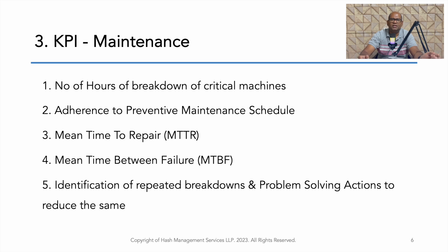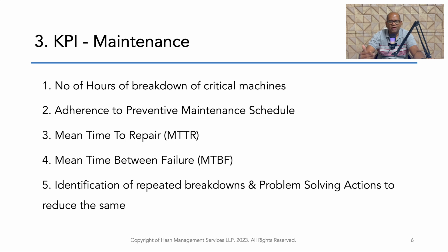In the maintenance department, the objective is to ensure machines do not break down and are available for production whenever required. KPIs include number of hours of machine breakdown — ideally this should be zero. Adherence to preventive maintenance schedule is a good KPI. Mean time to repair (MTTR) and mean time between failures (MTBF) are also good KPIs. MTTR is the average time taken to repair a machine, while MTBF is the average time the machine runs between failures — this should be high. The department should also focus on reducing repeat breakdowns and complaints and the actions taken to address them.